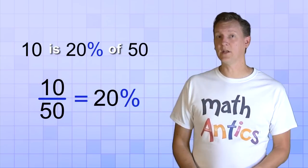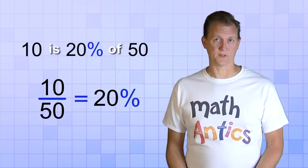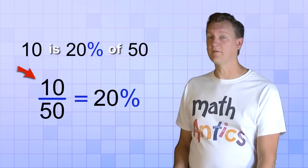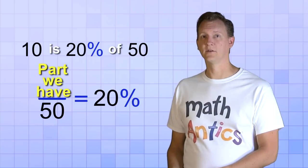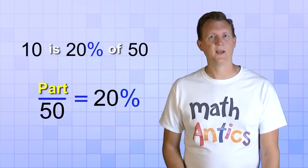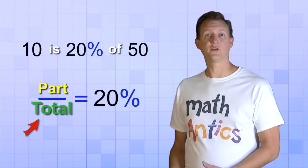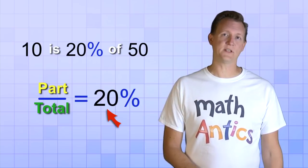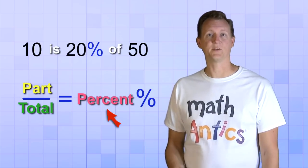And we're going to give each one of these three numbers a name so that we don't get confused. We're going to call the top number of the fraction, the part we have, or just the part for short. And we're going to call the bottom number, the total. And we're going to call the number in front of the percent sign, the percent or percentage.